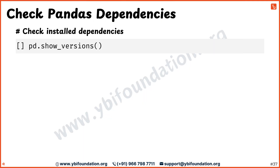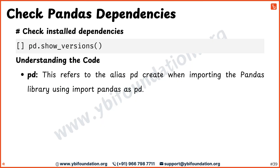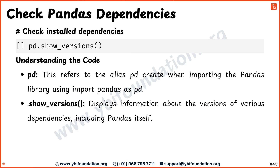Now, learn how to check the already installed dependencies of the pandas library. First, pd refers to the alias for the pandas library. Next, we have .show_versions(), which displays detailed information about the versions of various dependencies that pandas relies on, including the version of pandas itself.